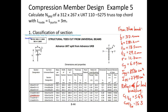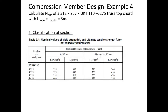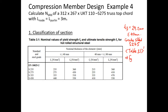With the flange thickness of 29.2 mm being ≤ 40 mm, Table 3.1 of EN1993-1-1 confirms that for S275 steel the yield strength fy = 275 N/mm² and the ultimate strength fu = 430 N/mm².